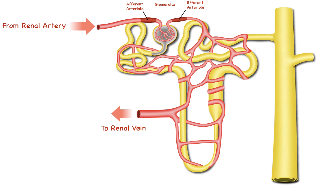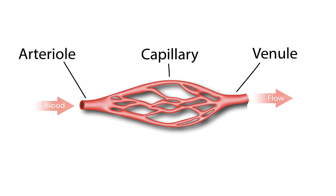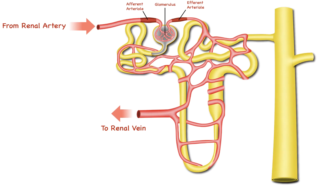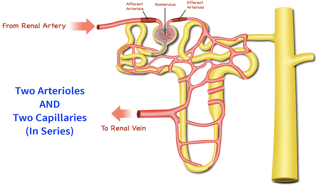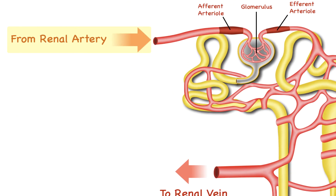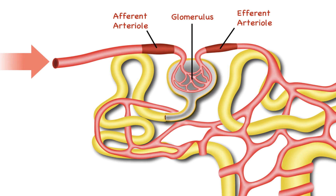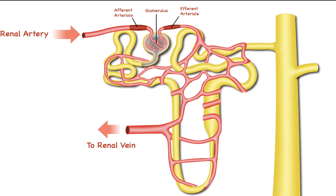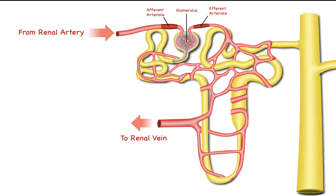The kidneys have an interesting and unique organization with regards to vasculature at the level of the nephron. Most systemic perfusion systems consist of an arteriole, a capillary bed, which drains blood into a venule directing blood back to the heart. The kidney's perfusion system, on the other hand, consists of two arterioles and two capillary beds in series. Blood from the renal artery makes its way to the afferent arteriole, then the glomerular capillary where filtration takes place, and the blood and plasma not filtered then collects into the efferent arteriole before moving to the peritubular capillary.